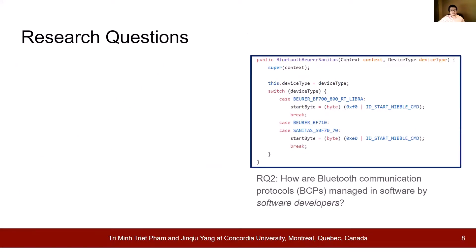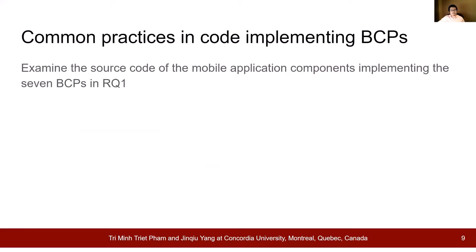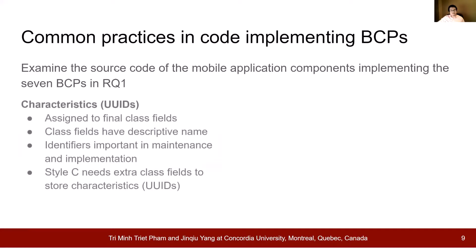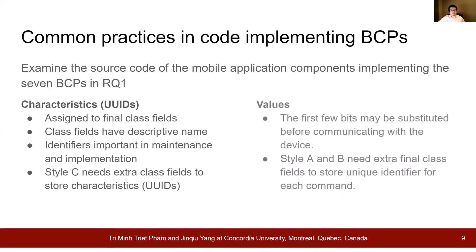Next, we'll explore the findings of RQ2. We further examined the source code implementing the BCPs from RQ1 and found a few common practices relating to characteristics and values. For characteristics, we found that they are commonly assigned to final class fields with descriptive names, which are very important to their implementation and maintenance. Also, Style C, which relies on characteristics to identify functionalities, will require many more class fields compared to Style A and Style B. As for the values, the first few bytes can be used to identify the commands. Thus, for Style A and B, there will be extra final class fields to store the unique identifiers for each command, which would be substituted before communicating with the device.